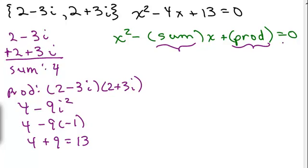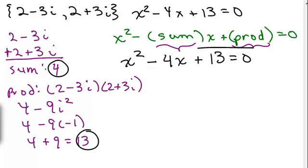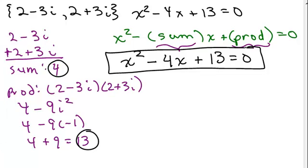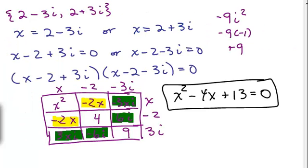So according to this formula, I could simply write x² minus, then I put the sum for the coefficient of x. So there's my minus sign. The sum was 4. So minus 4x plus the product. There's the product. 13 equals 0. And that's how you can use the formula to get the answer for 2 - 3i and 2 + 3i instead of going through all the steps we just did previously over here.